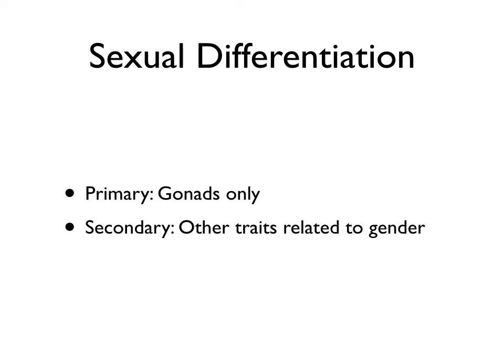For humans, things like a beard on a male — that's an example of a secondary sexual characteristic that can be used for sexual differentiation.